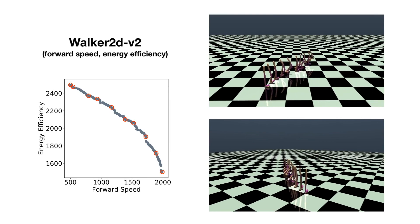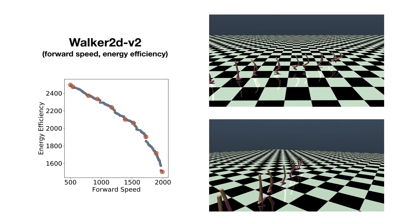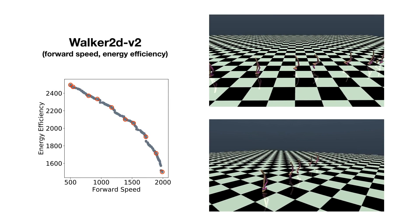For Hopper, the first objective is forward speed and the second objective is energy efficiency.